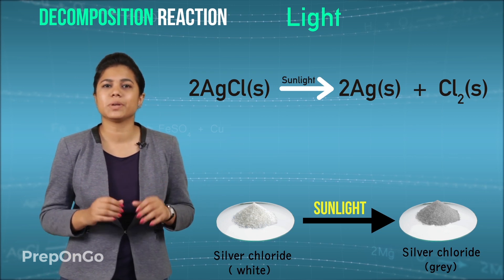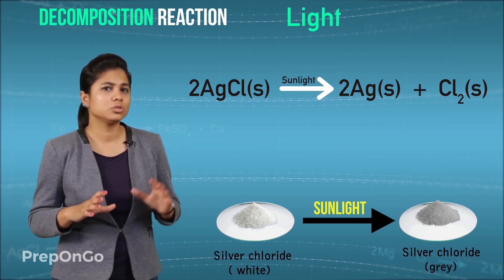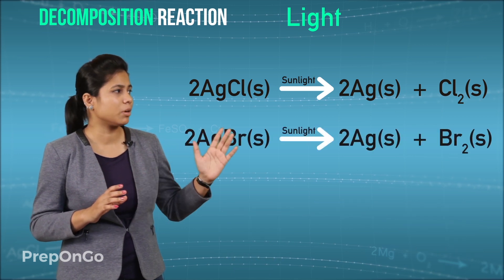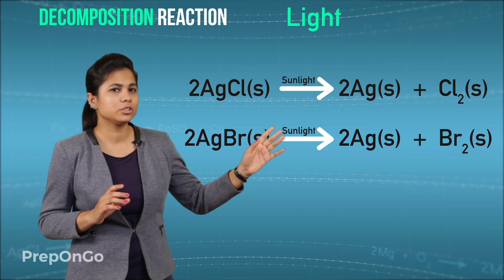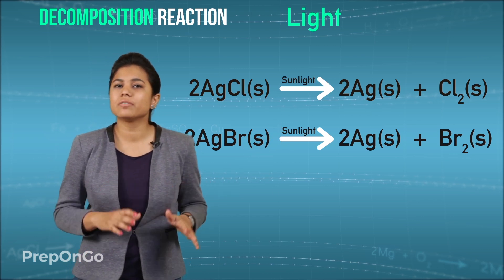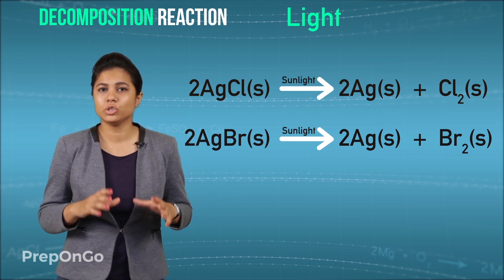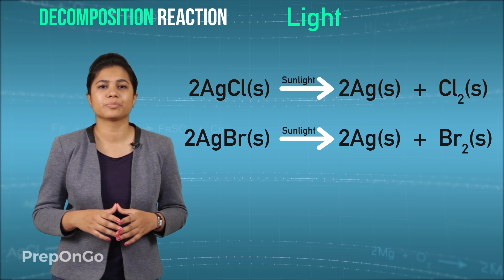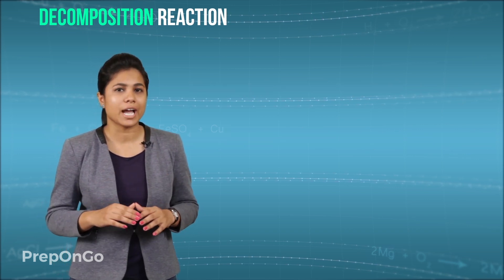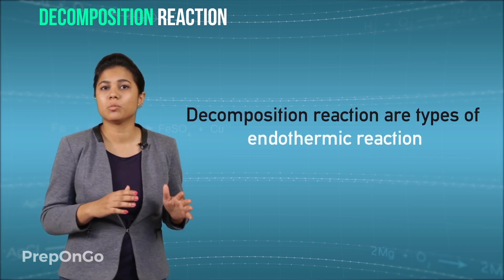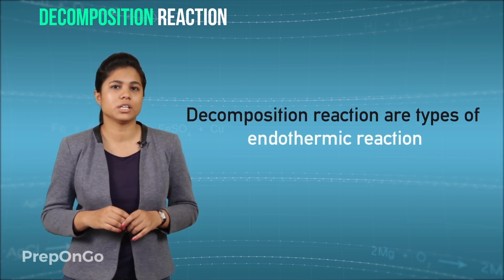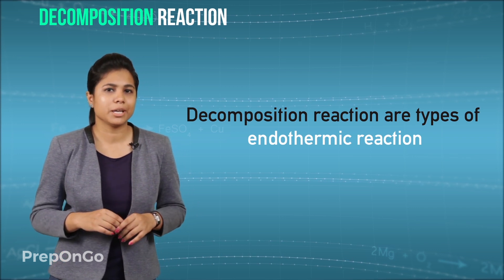The similar reaction takes place with silver bromide. Silver bromide in the presence of sunlight gets decomposed into silver and bromine. Silver bromide and silver chloride are used in black and white photography. Now we have seen in decomposition reaction there is always absorption of some sort of energy in the form of heat, electricity or sunlight. So they are endothermic type of reaction.